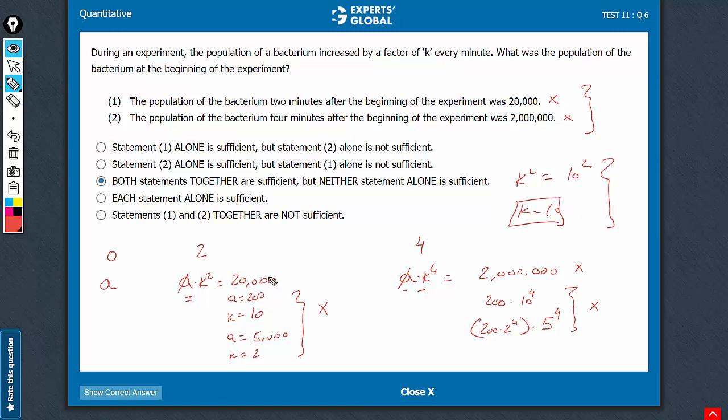This is just to explain. You don't have to do the math. The point is, statement 1 gives you one equation, not sufficient. Statement 2 gives you one equation, but a different equation. So not sufficient, but together, two equations, two variables can be solved, and therefore C is correct.